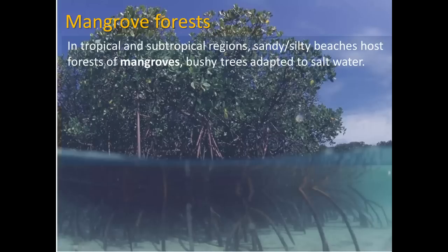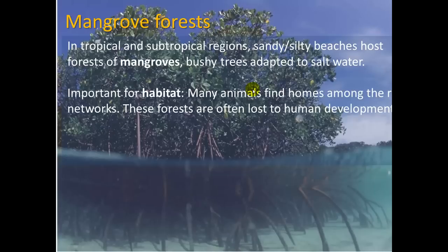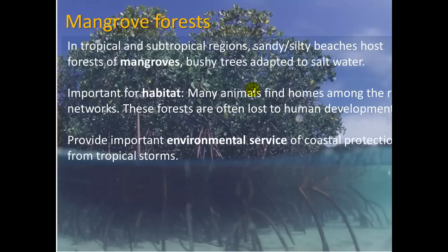Mangrove forests are found in tropical and subtropical regions on sandy and silty beaches. They host forests of mangroves — bushy trees adapted to salt water — with roots deeply anchored in the sand below. Many animals find homes among the root networks. Unfortunately, these forests are often lost to human development, which is a problem because they provide important coastal protection from tropical storms, breaking up wind like shelter belts.